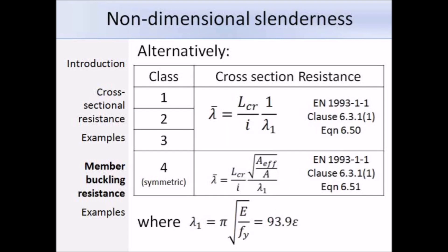Alternatively, we have the option to work out lambda bar using these expressions. For class 1, 2, and 3 sections, we have the effective length over the radius of gyration about the relevant axis times 1 over this new term lambda 1. The effective length over the radius of gyration, L over i, is the same as the slenderness you use in BS 5950.